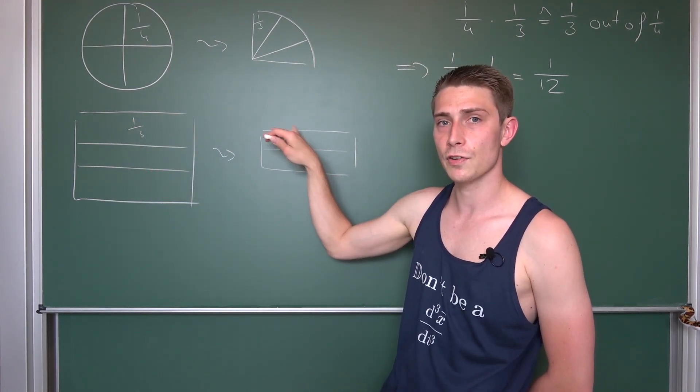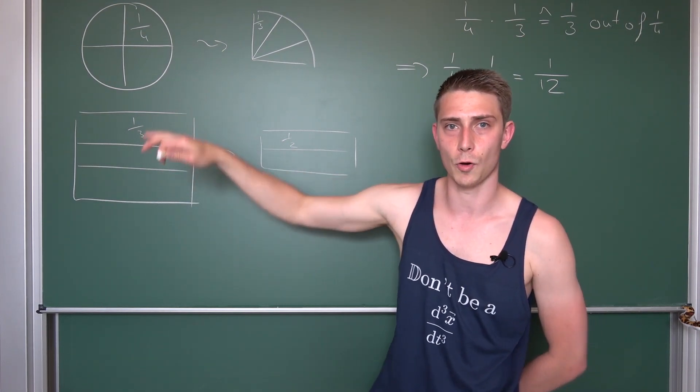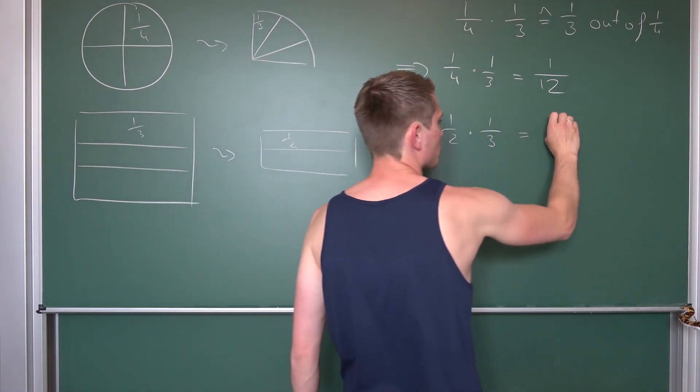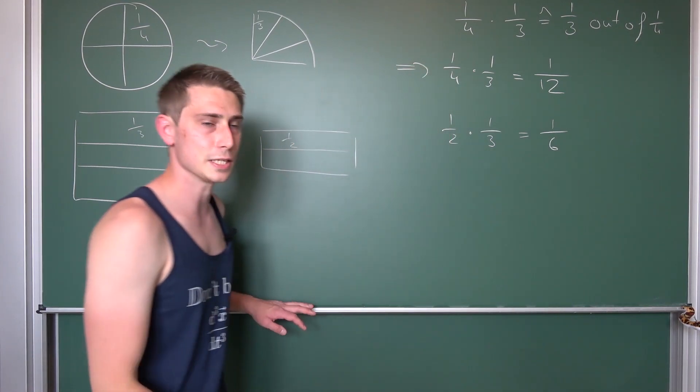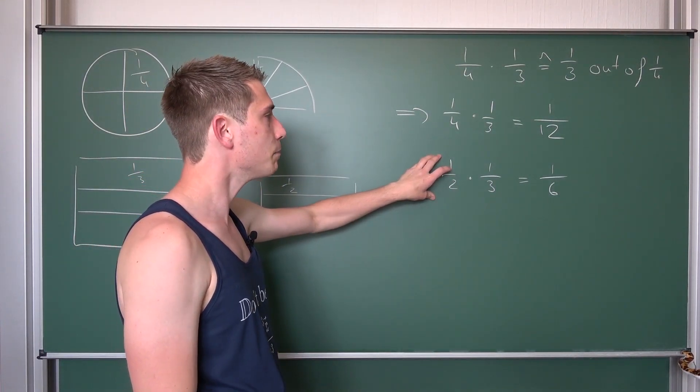Meaning, it fits four times into two thirds and exactly six times into one whole square. Meaning, a half of a third is just one part of six out of a whole thing. So this is just one sixth. And maybe you can see a pattern here.